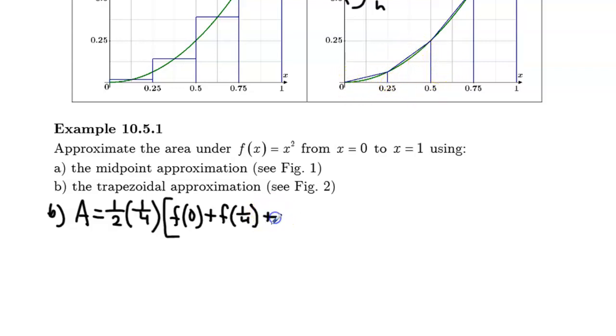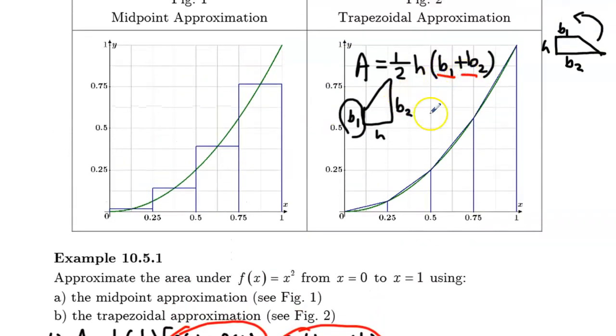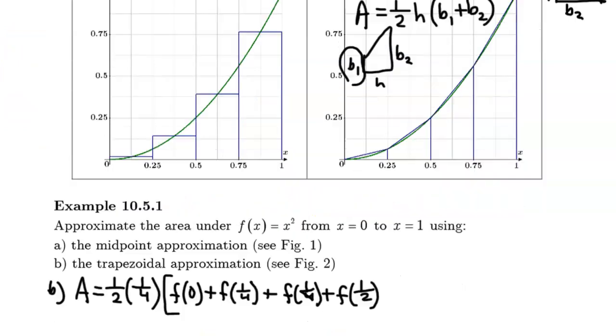The second trapezoid would be base one plus base two, which would be f at a quarter plus f at a half. Now it looks like I've repeated f at a quarter here. And yes, I have. But these two here go into the calculation of the area of the first trapezoid. These two here go into the calculation of the second trapezoid. Because remember, the calculation of the area of a trapezoid requires these two base lengths. So I'm just going to reverse those, the red marks there, and then I'm going to continue.